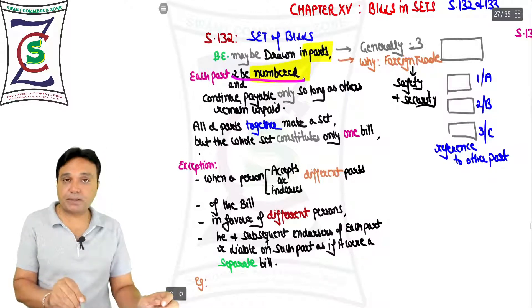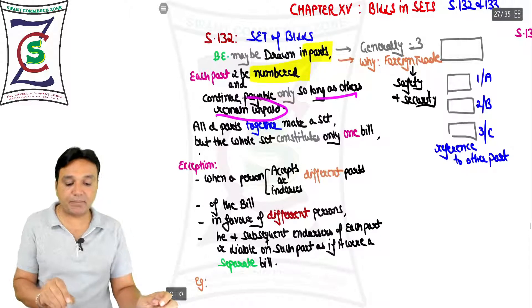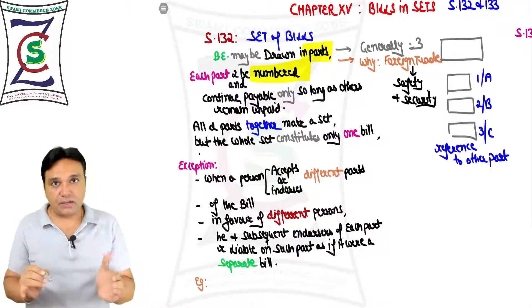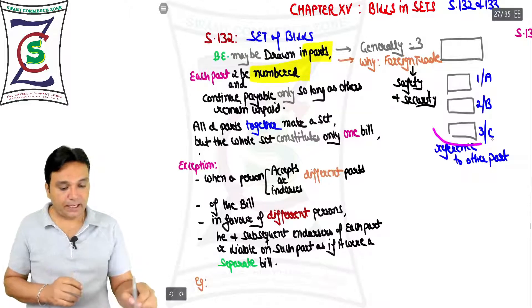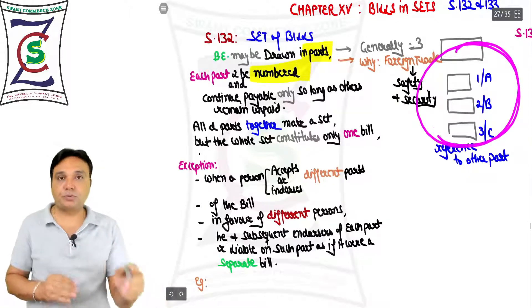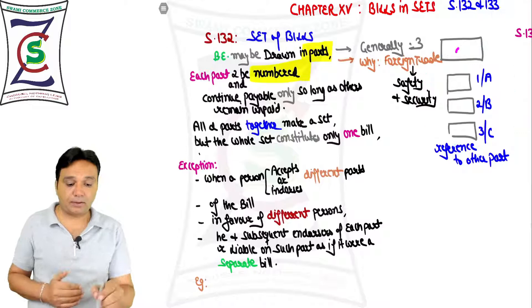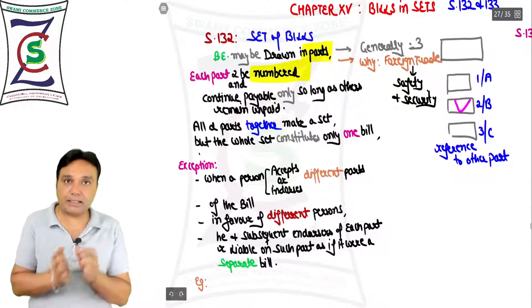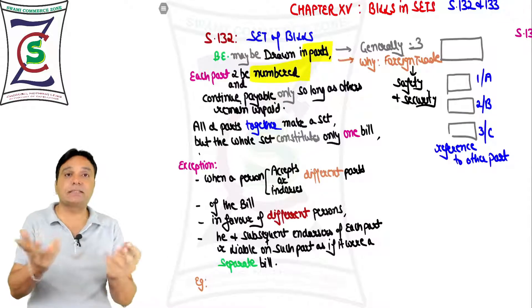Each part to be numbered and continue payable only so long as others remain unpaid. Obviously, they are parts and they will continue to remain payable only so long as others remain unpaid.